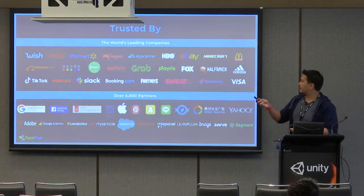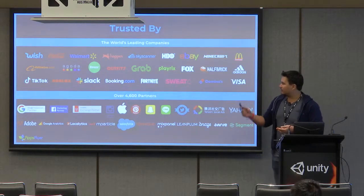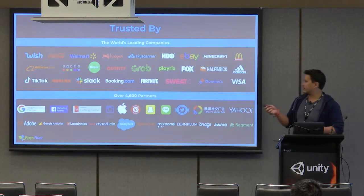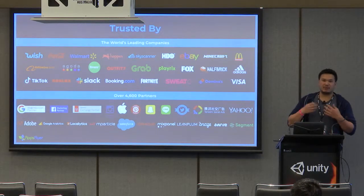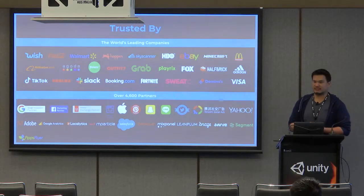This scale of data gives us a lot of insights into where we see mobile ad fraud globally and how we can protect our clients against it to help save their budget and clean up their data. We're trusted globally by the biggest companies, and many gaming studios use AppsFlyer for attribution and fraud protection — for example, Playrix, Minecraft, Roblox, Fortnite, as well as many studios here in Australia.